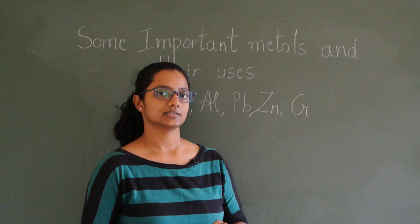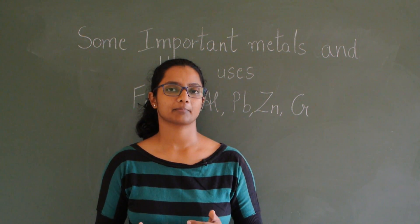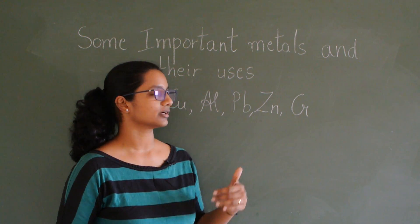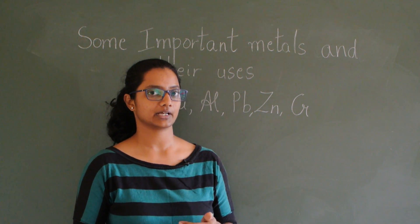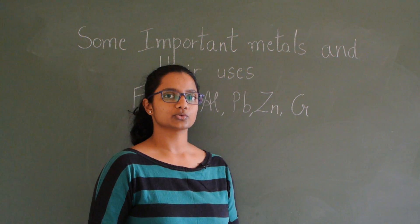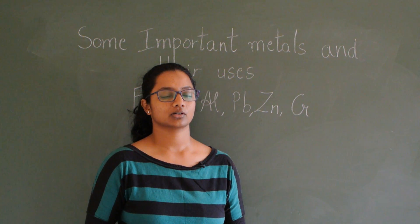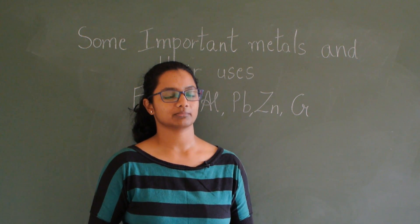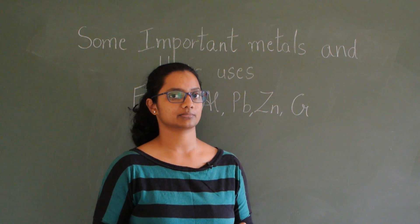Zinc is used in coating iron because this prevents it from rusting — since zinc is more reactive, it creates a zinc oxide layer that prevents the iron from rusting. Zinc is also used in the manufacturing of paints, in making rubber, in the cosmetic and pharmaceutical industries, and in making many alloys like brass, bronze, and German silver.